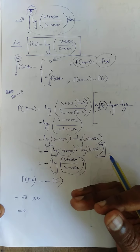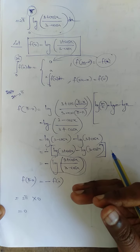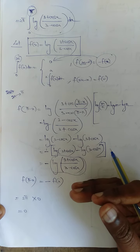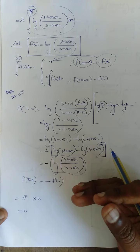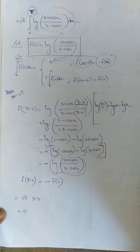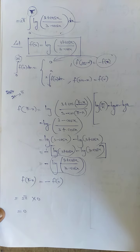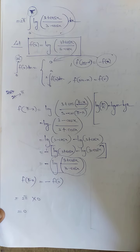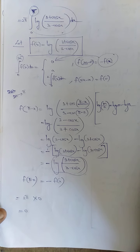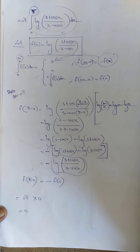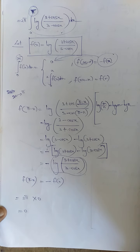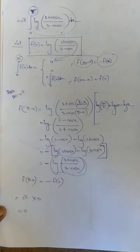This sum uses nearly 2 to 3 properties and some steps can be confusing. Derive this sum 2 to 3 times so it will become very easy for you. Thank you.